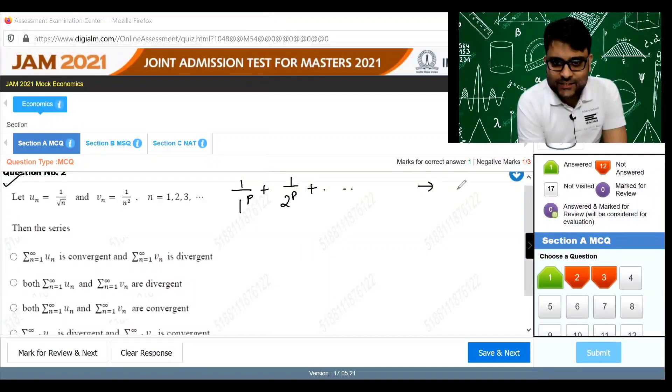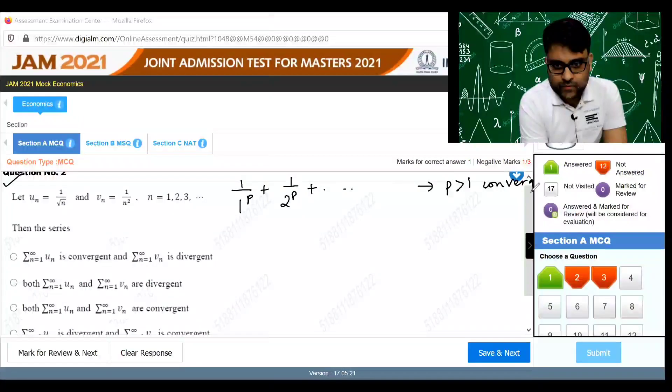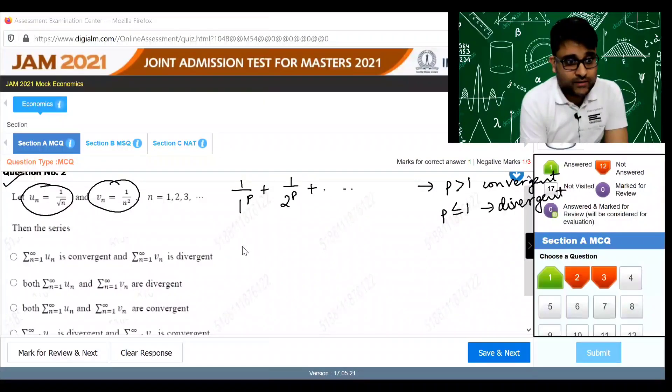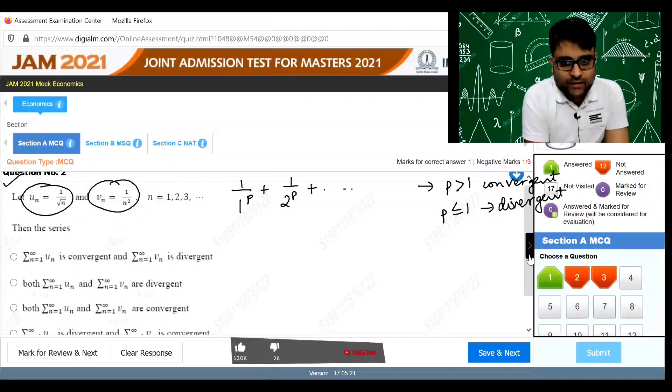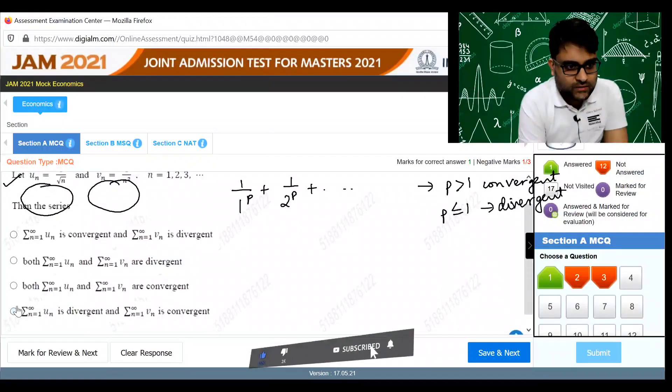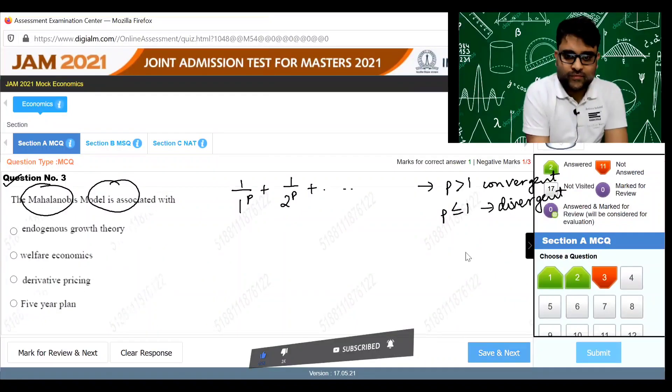This series will be convergent if p is greater than one, and if p is less than or equal to one, it is divergent. So here un will be divergent, vn will be convergent. The answer is number four.